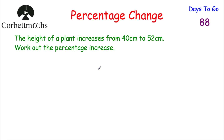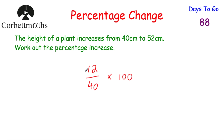It's a percentage increase, so we use the formula: change ÷ original × 100. The change is 52 − 40 = 12, divided by the original of 40, multiplied by 100. Since it's non-calculator, I'll cancel down the fraction 12/40. Both are divisible by 4, so 12 ÷ 4 = 3 and 40 ÷ 4 = 10, giving us 3 tenths.